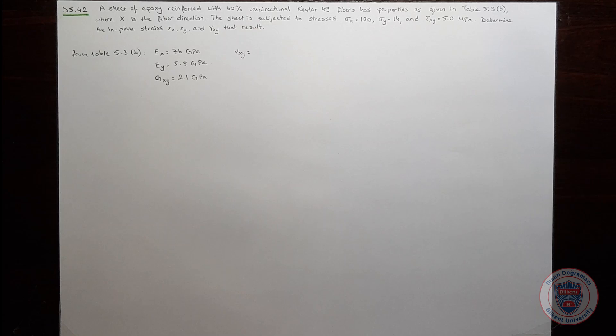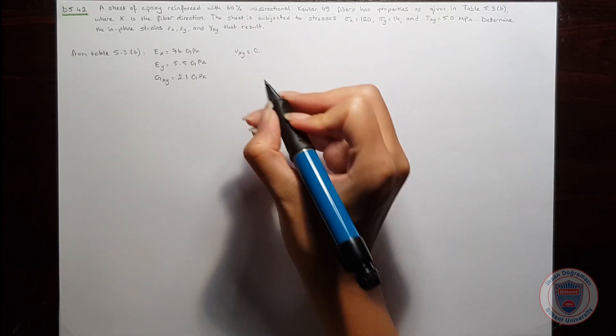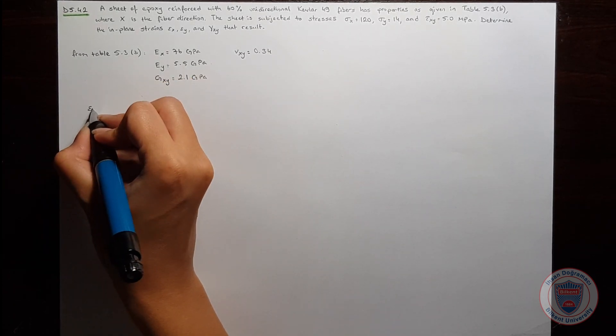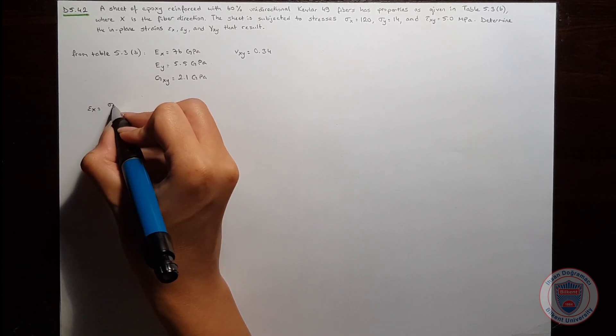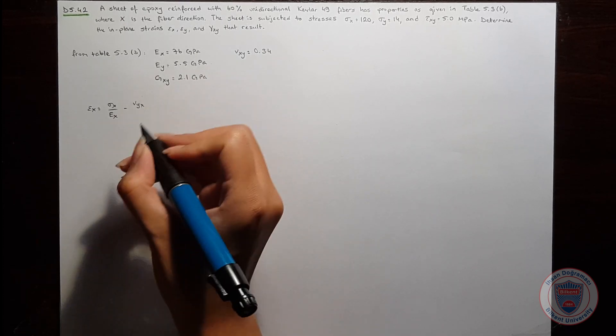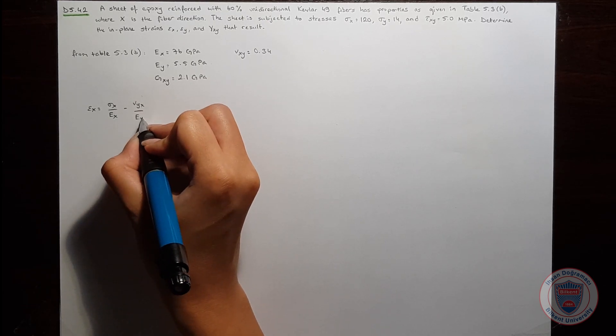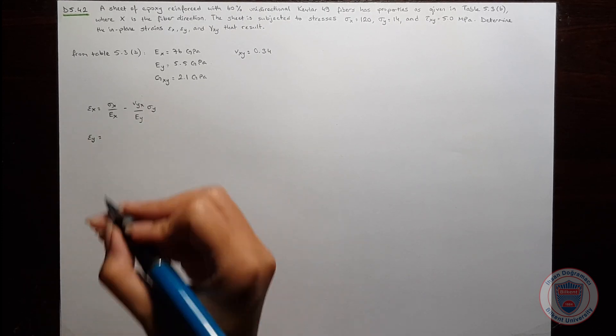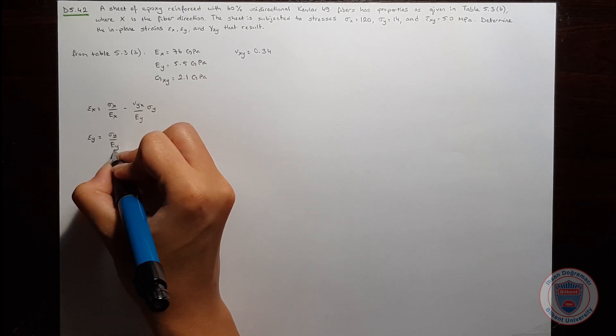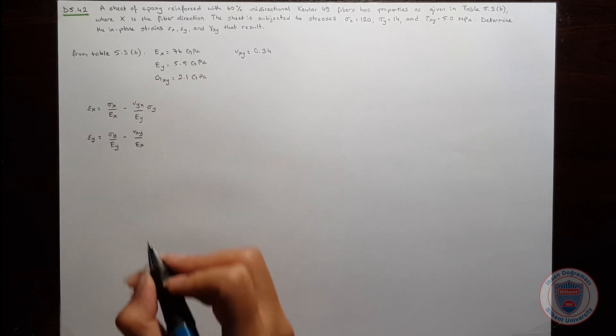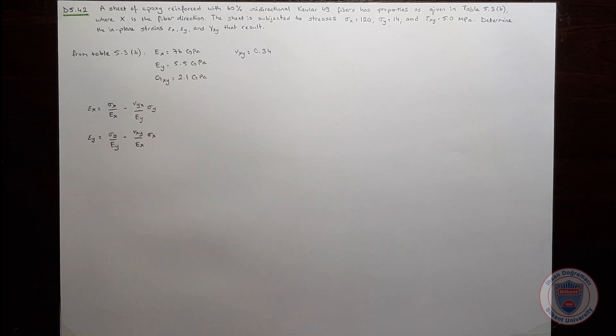nu XY is equal to 0.34. The strain equations are epsilon X equals sigma X over EX minus nu XY over EX times sigma Y, and similarly epsilon Y equals sigma Y over EY minus nu YX over EY times sigma X. We have all the data to solve these questions except nu YX.